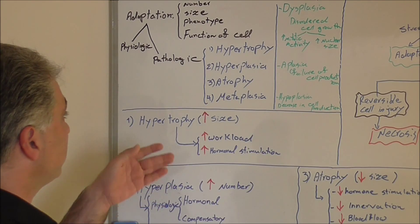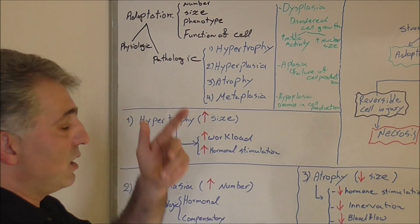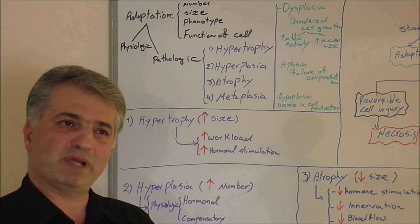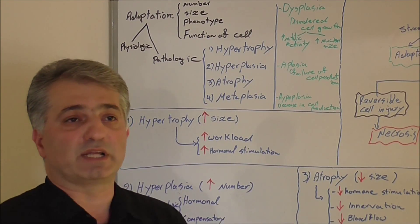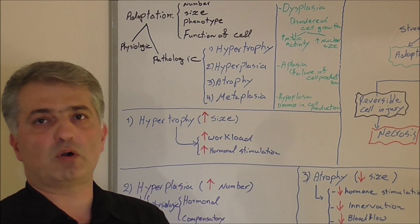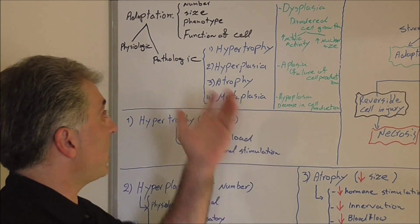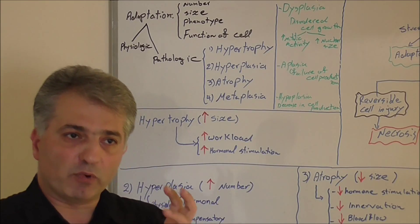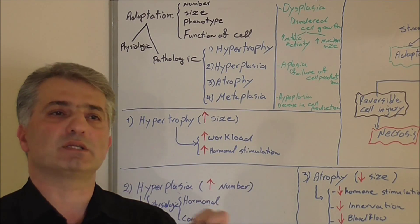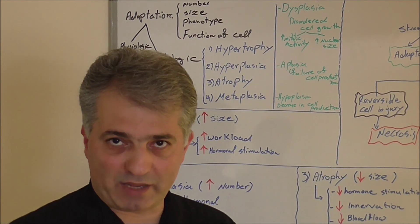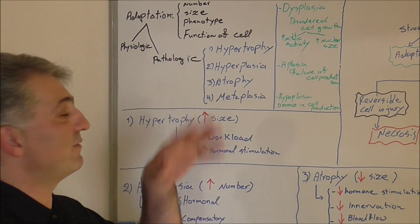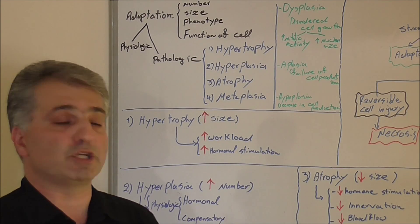How does adaptation happen? How will the cell adapt to the situation? The number of cells can increase, or the size, or the shape or phenotype, or the appearance of the cell, or the function. Actually, all of these can happen, sometimes even a combination of two in one situation.